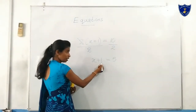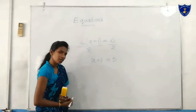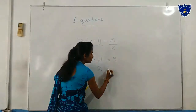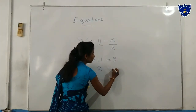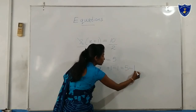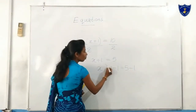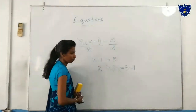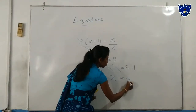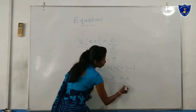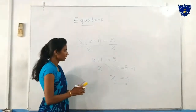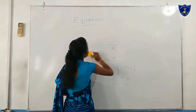Then we want to remove plus 1. We take x plus 1 minus 1 equals 5 minus 1. Here 1 cancels out, so x equals 4. x equals 4 is the solution of this equation.